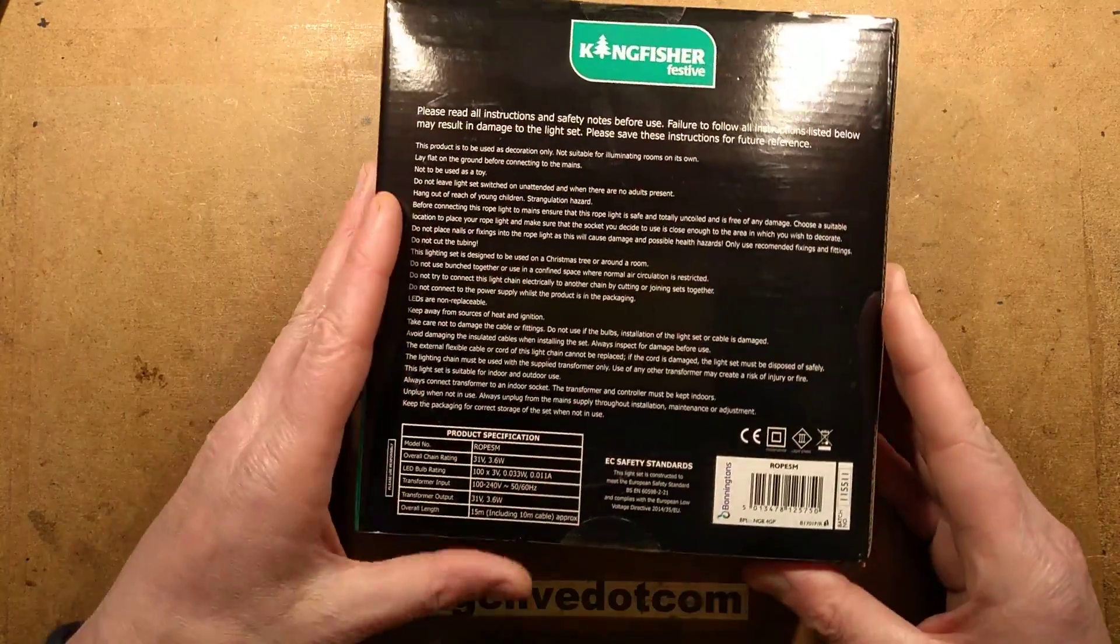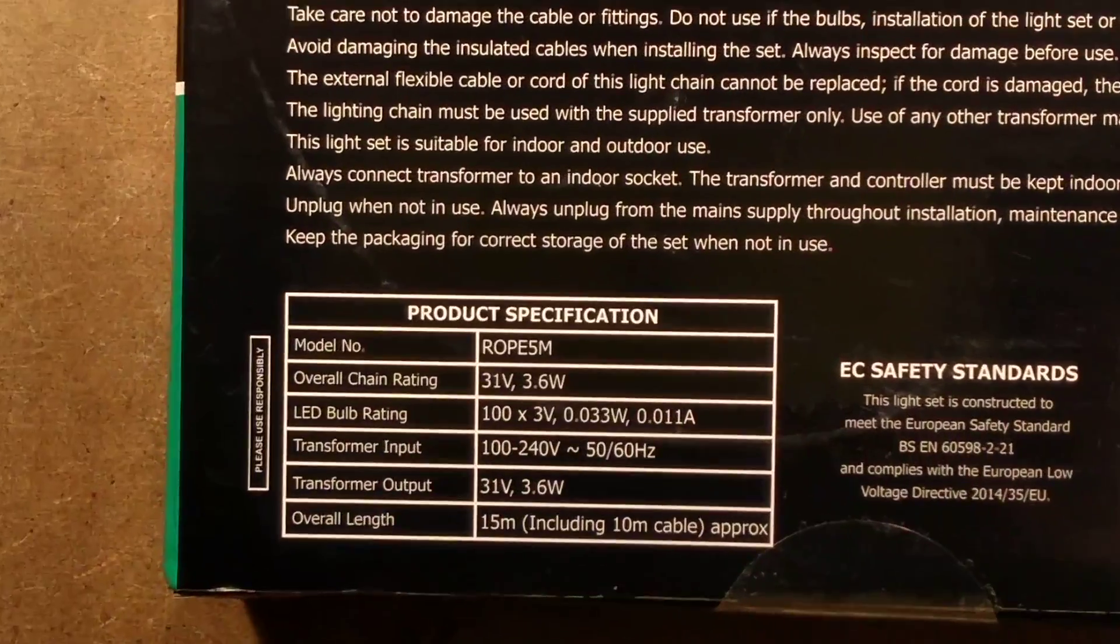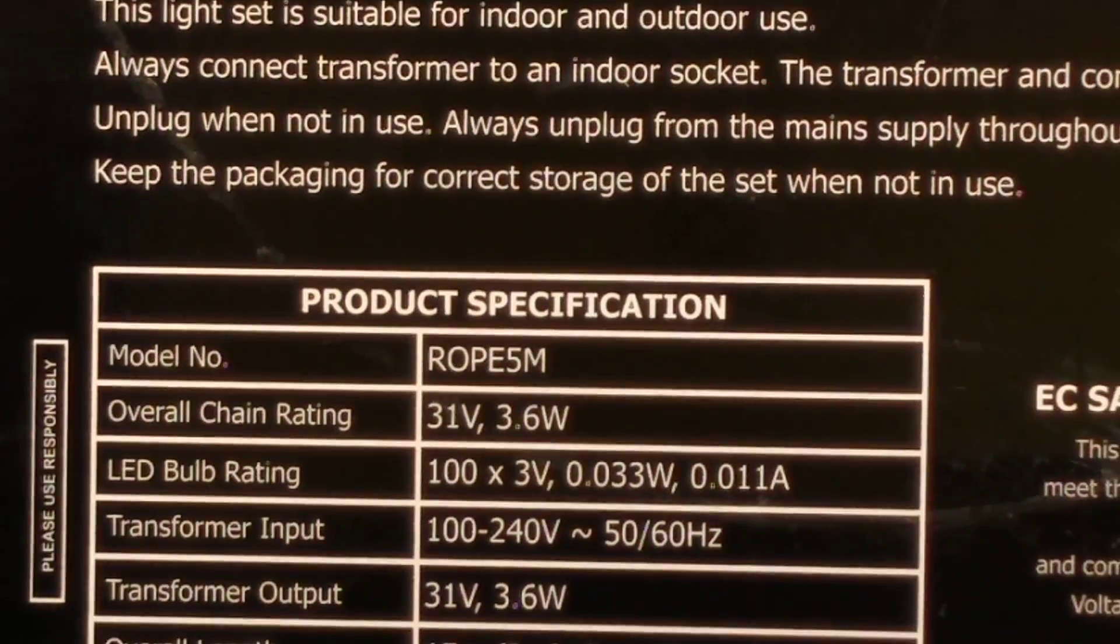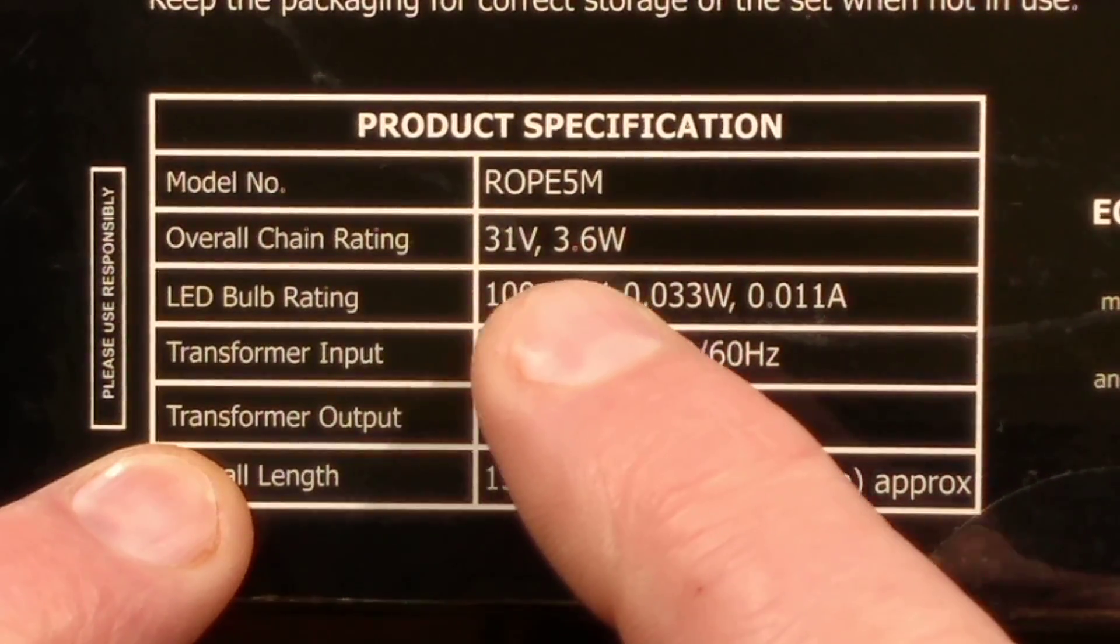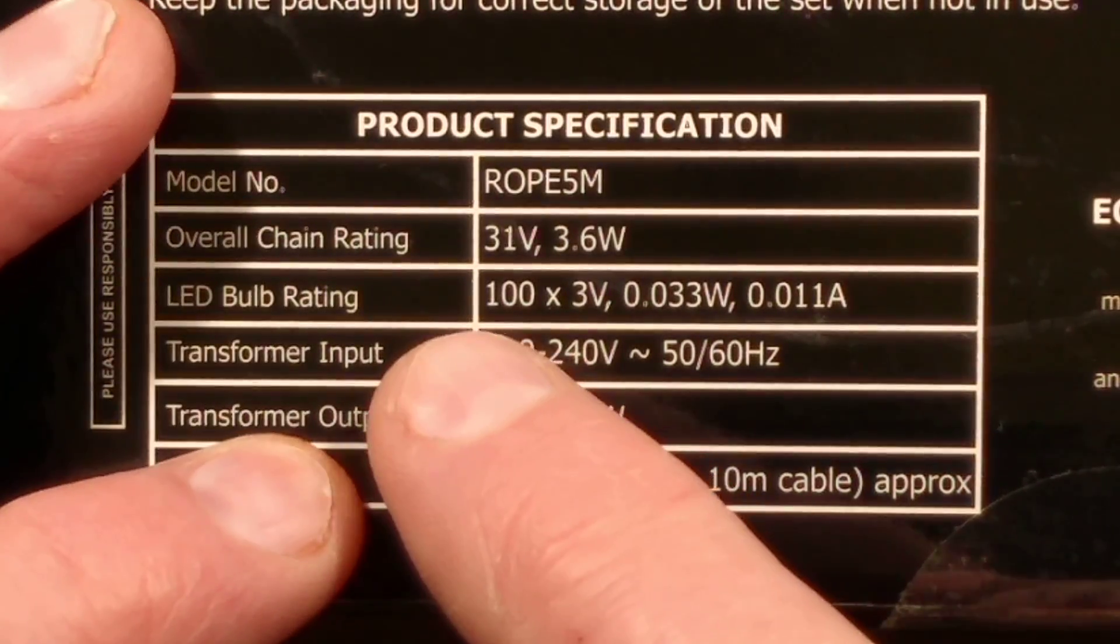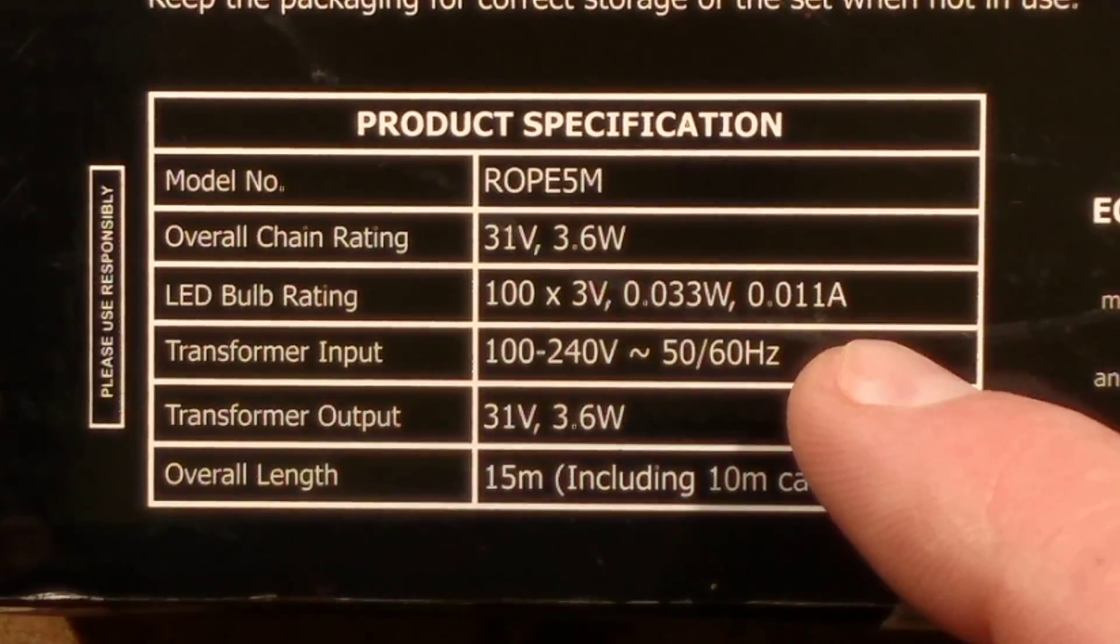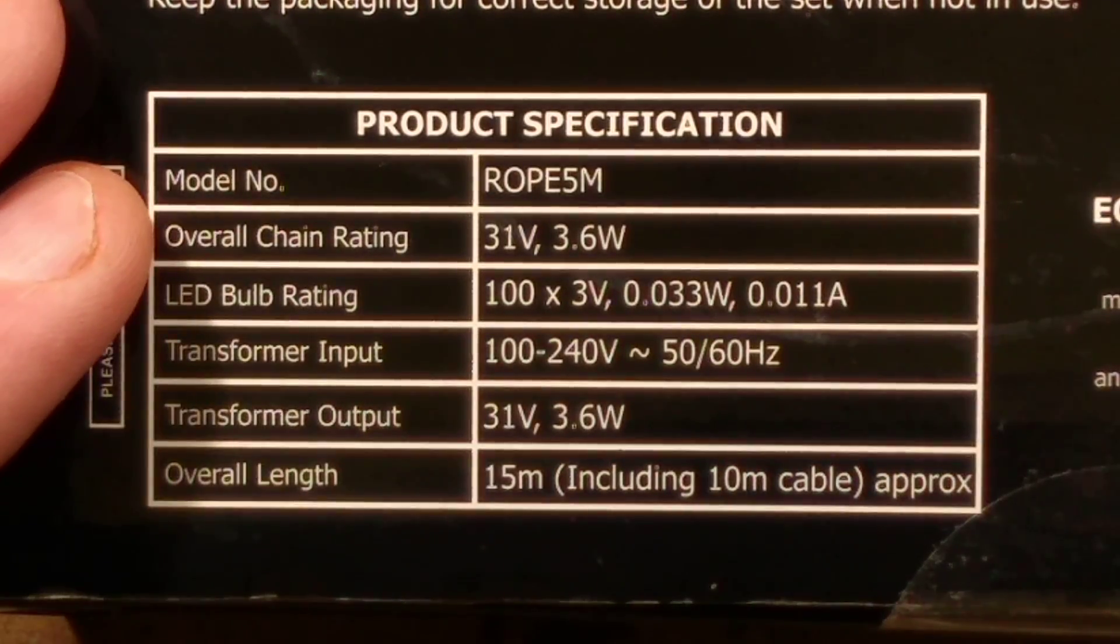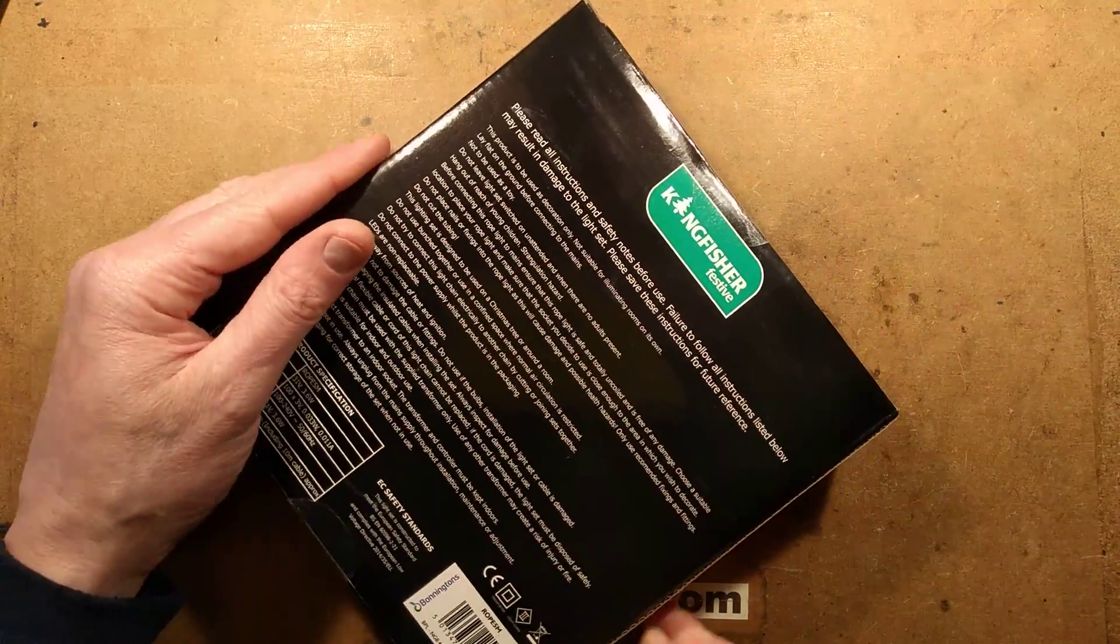But when you look at the back of the box, the specifications, it says 31 volt 3.6 watts which I'd normally associate with LED fairy lights, and especially when you get to the 100 lamps at 3 volts at about 11 milliamps each that does suggest that this may well contain LED rope light. But there's only one way to find out and that is to open it.